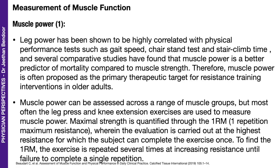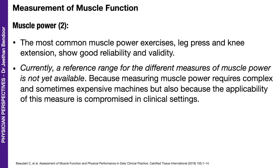For muscle power, leg power has been shown to be highly correlated with physical performance tests, and studies have found that muscle power is a better predictor of mortality compared to muscle strength. Muscle power can be assessed across a range of muscle groups, but most often the leg press and knee extension exercises are used. Maximal strength is quantified through one RM — one repetition maximum resistance. Currently, a reference range for the different measures of muscle power is not available.